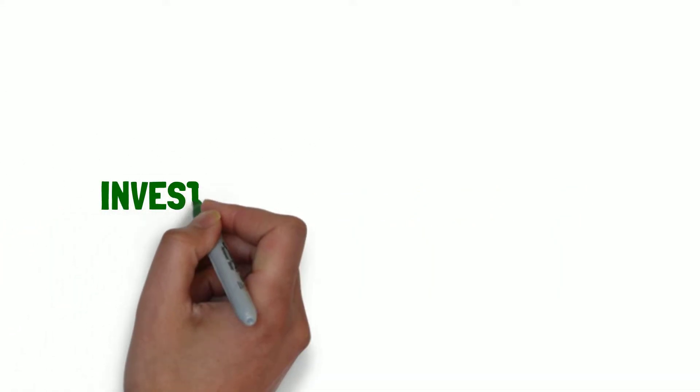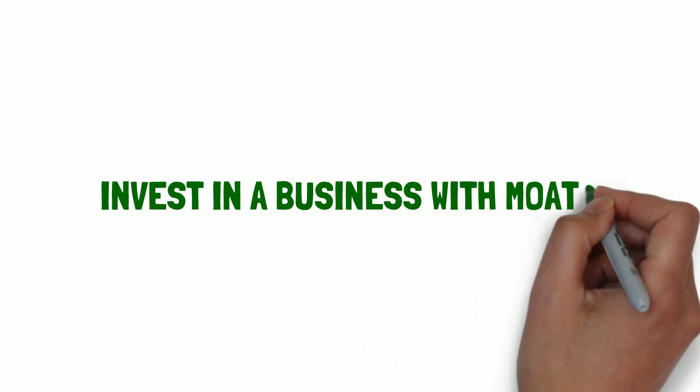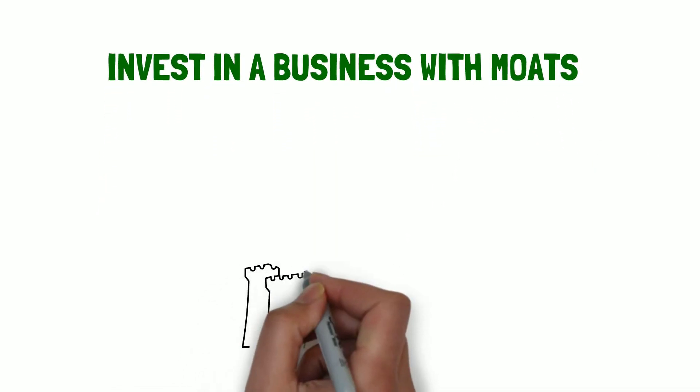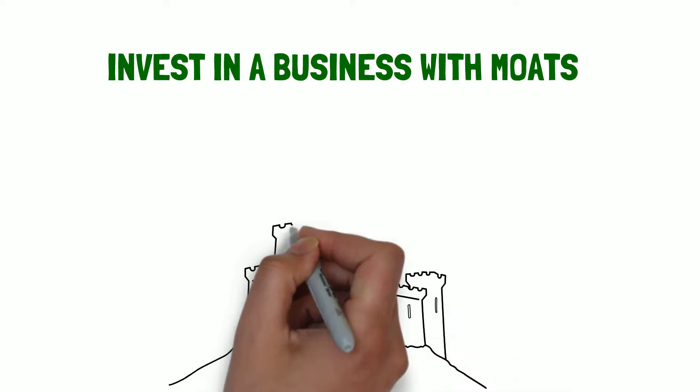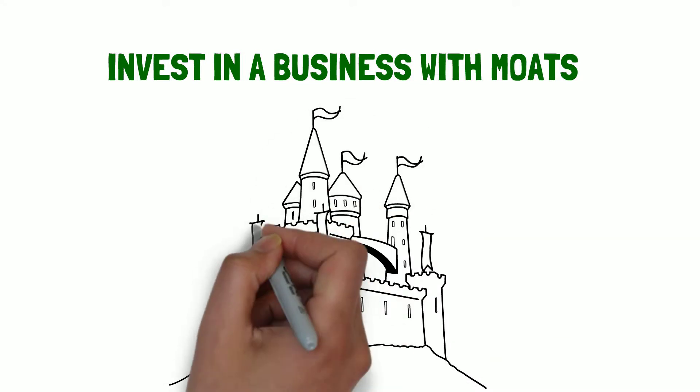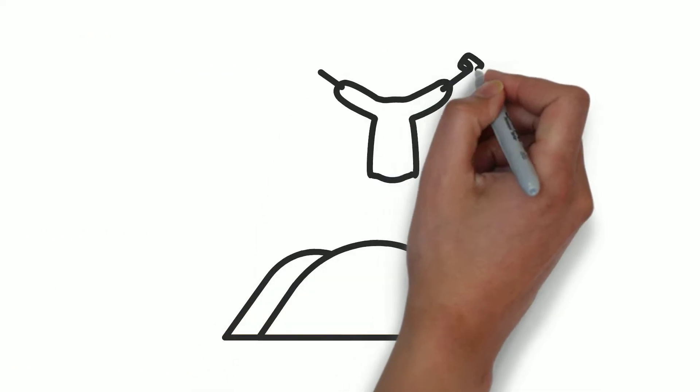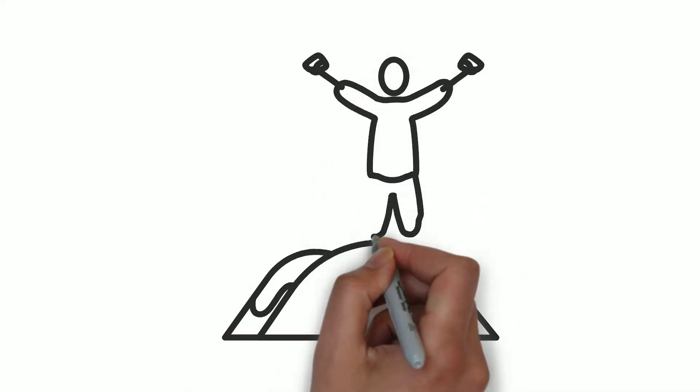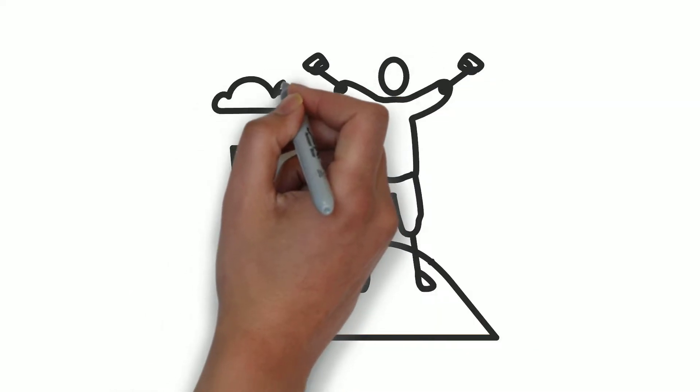The third lesson is to invest in a business with moats. The analogy Buffett uses is that the business itself should be viewed as the equivalent of a castle, and the value of that castle will be determined by the strength of the protective moat. To be successful, a company must have a definite moat, a competitive advantage that allows it to maintain pricing power and better-than-average profit margins.